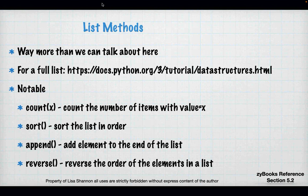List methods: there are many methods available. Some notable ones are count, sort, append, and reverse — notable because you're going to need them in labs this week. You can count the number of items in a list, sort a list, append an element, and reverse sort a list. Check the Python documentation URL for a comprehensive list.